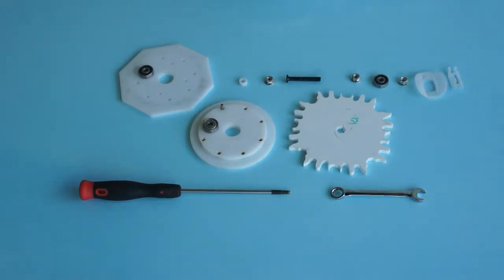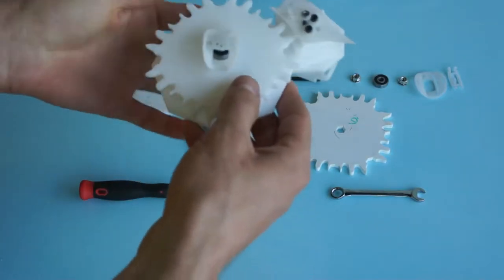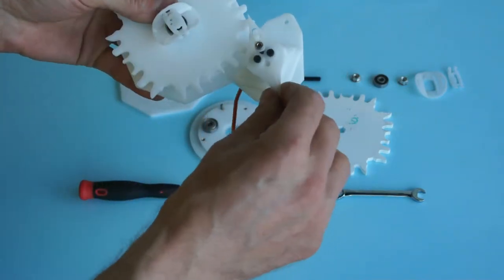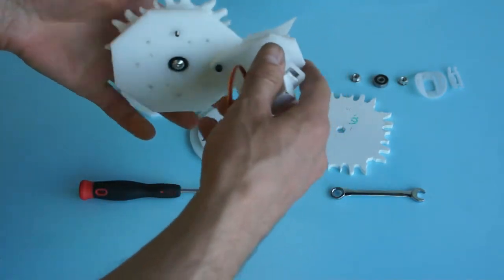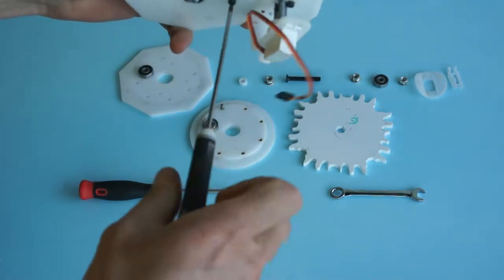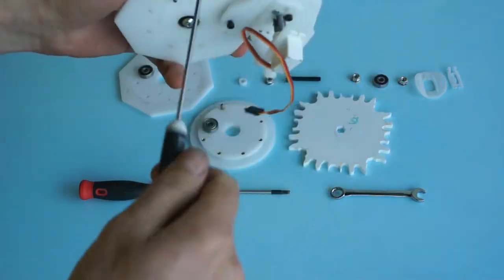Alright, so in this video we will see how to assemble the driver module. I took here one of the driver modules that already sits with a junction module attached. I'll just remove that so we can have a look at it as it looks without.